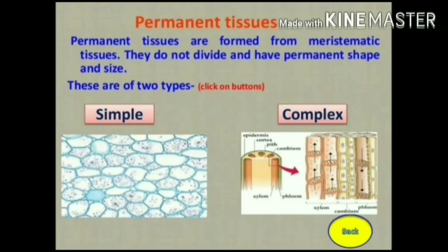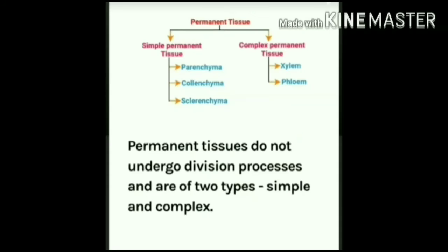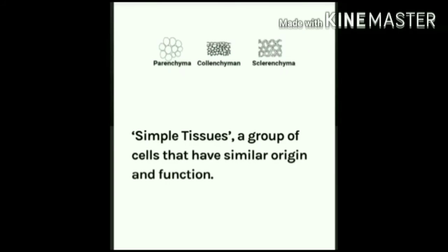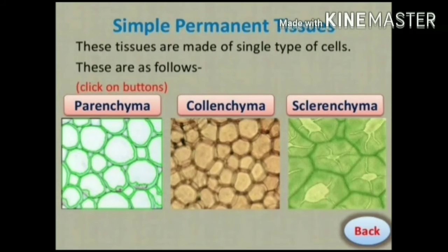Permanent tissues are of two types: simple and complex tissues. Simple permanent tissues are made up of only one type of cell, and all the cells that make up the tissue are similar in structure. Simple permanent tissues are classified into three main types: parenchyma, colenchyma, and sclerenchyma.